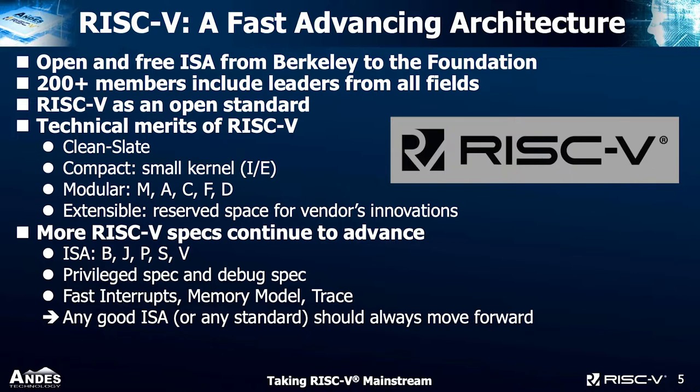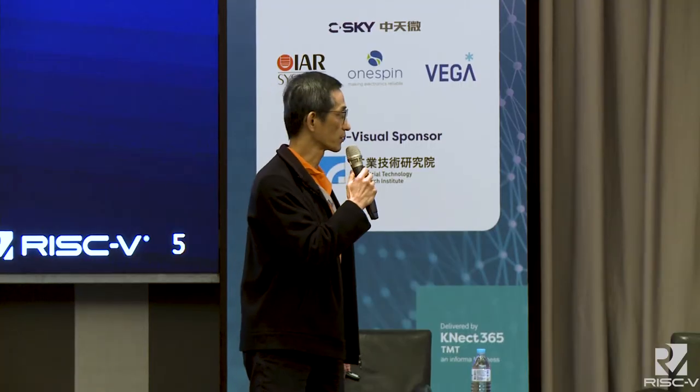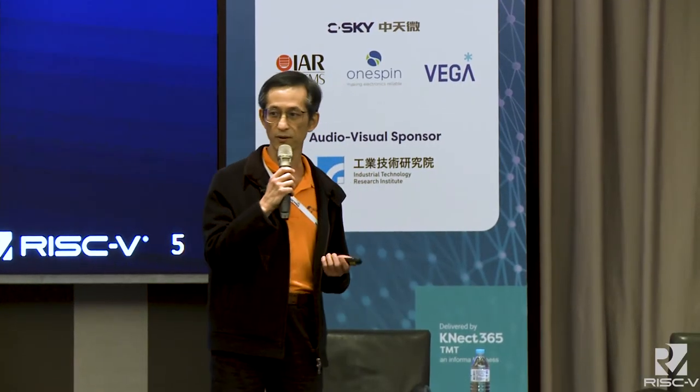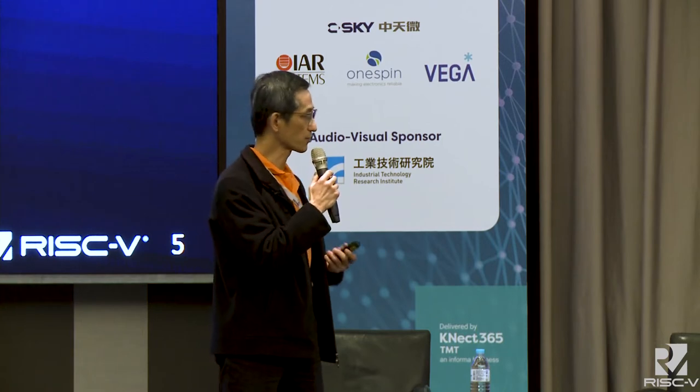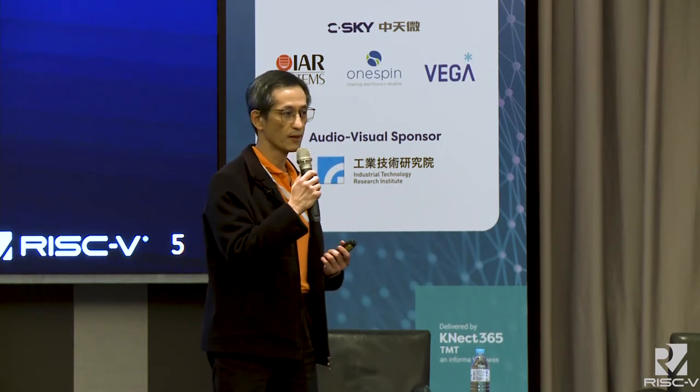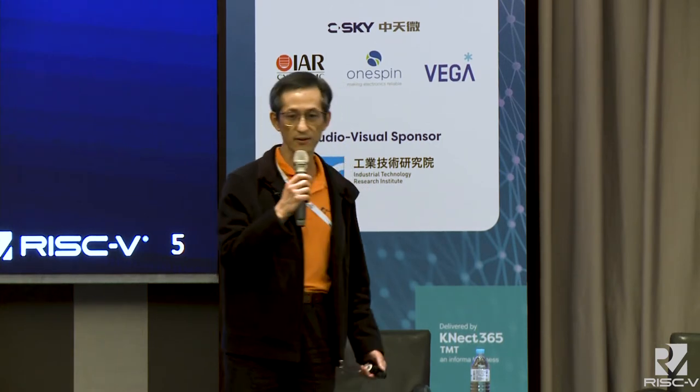From the ISA side: B extension for bit manipulation, Java-type execution environment, P extension, security, vector, and so on. Also fast interrupt, which is about to close. There are memory model, trace support, and so on. I think this is what a good standard, a good ISA should be — it should continue to move forward to catch the application requirements.